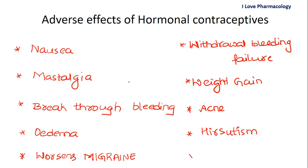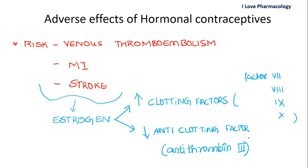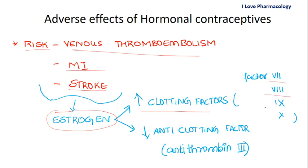The adverse effects of hormonal contraceptives include nausea, mastalgia (breast pain), breakthrough bleeding, edema due to water and sodium retention, worsening of pre-existing migraine, and failure of withdrawal bleeding. Progesterone with androgenic activity can cause weight gain and acne as well as hirsutism. Very importantly, hormonal contraceptives increase the risk of venous thromboembolism, myocardial infarction, and stroke — mainly due to the estrogenic component, because estrogen increases clotting factors 7, 8, 9, and 10.